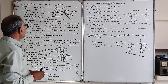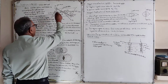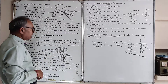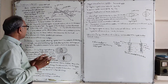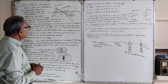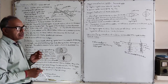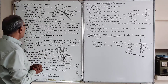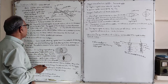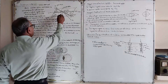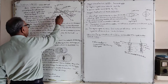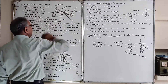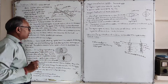When monochromatic light passes through, it splits into two rays: the ordinary ray and the extraordinary ray. The refractive index for the ordinary ray is 1.658, and for the extraordinary ray it is 1.486.